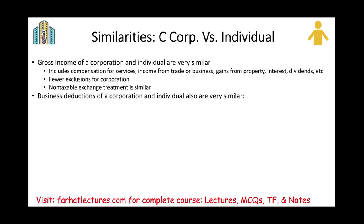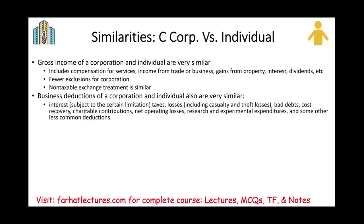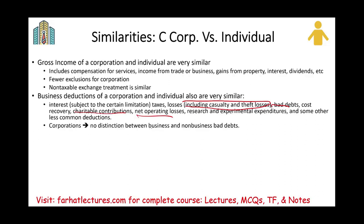When it comes to deductions, business deductions for corporations and individuals are very similar. You can deduct interest, taxes, losses including casualty and theft losses — with no AGI limitation here — bad debt, cost recovery (depreciation), charitable contributions, net operating losses, research and experimental expenditures, and other less common deductions. Corporations have no distinction between business debt and non-business debt, unlike individuals.